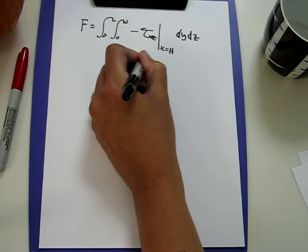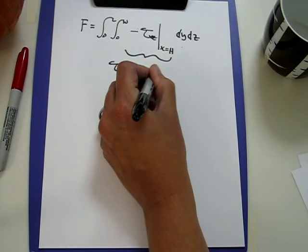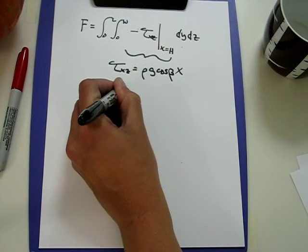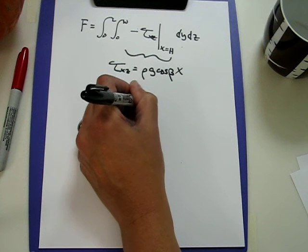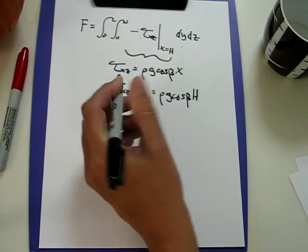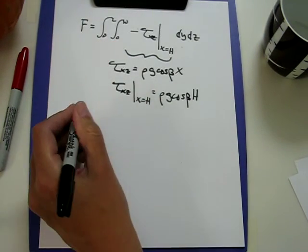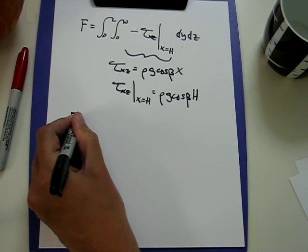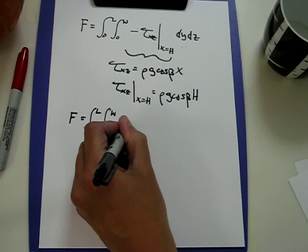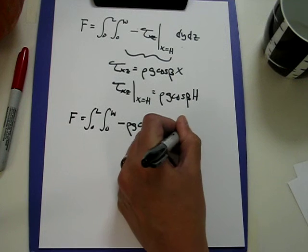This quantity, tau_xz we just calculated was rho g cos beta x. This quantity evaluated at x equal h is rho g cos beta h. Putting in an h for the x. And now I put this into my equation and I get force equals the integral from 0 to L, the integral from 0 to w of minus rho g cos beta h dy dz.